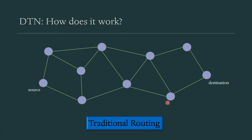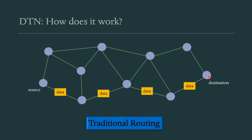In a traditional network, the source and destination are connected and we assume the shortest path between them. The message is sent to the immediate neighboring node, then the next, and so on until the packet reaches the destination. This is how traditional routing works when paths are already connected. If there is a failure in one path, the data can be sent through another path.